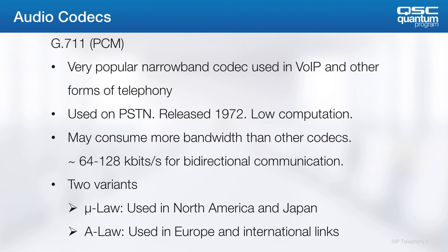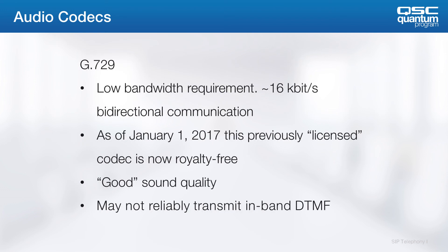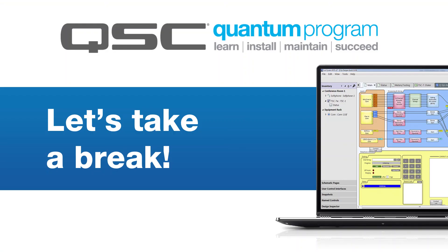G.711 has two variants: U-Law and A-Law, which is primarily used outside the United States. Then there's G.726, which requires about half the bandwidth of G.711 with around the same quality. Q-SYS supports a 32-bit version of this. G.729 is a very low bandwidth codec. Previously this was a paid-for codec, but recently the patent ran out and now it's royalty-free. This is a very low bandwidth codec but you still get decent quality. The thing to remember about low-quality codecs is that they may not reliably send DTMF — the lower quality may corrupt the DTMF and it won't reliably go through. We'll get back to DTMF in the next video.